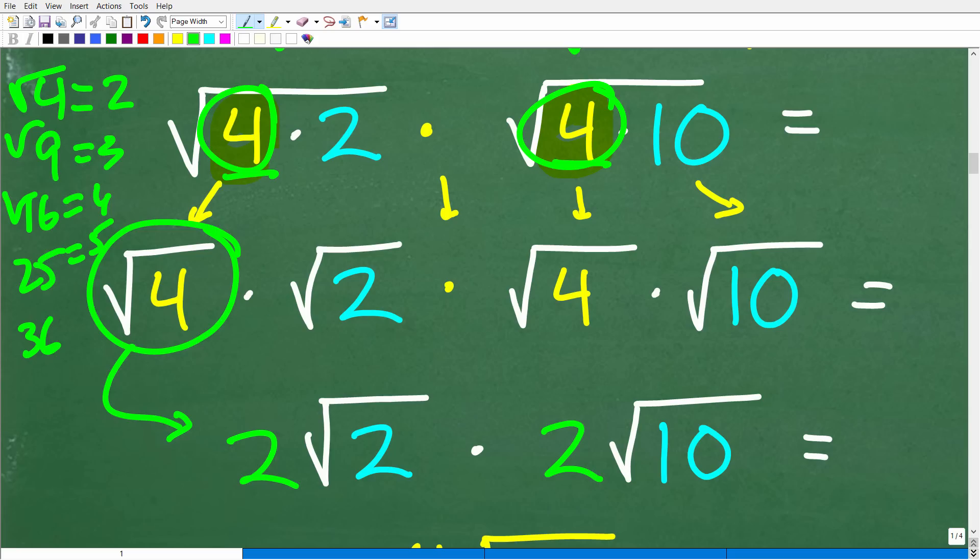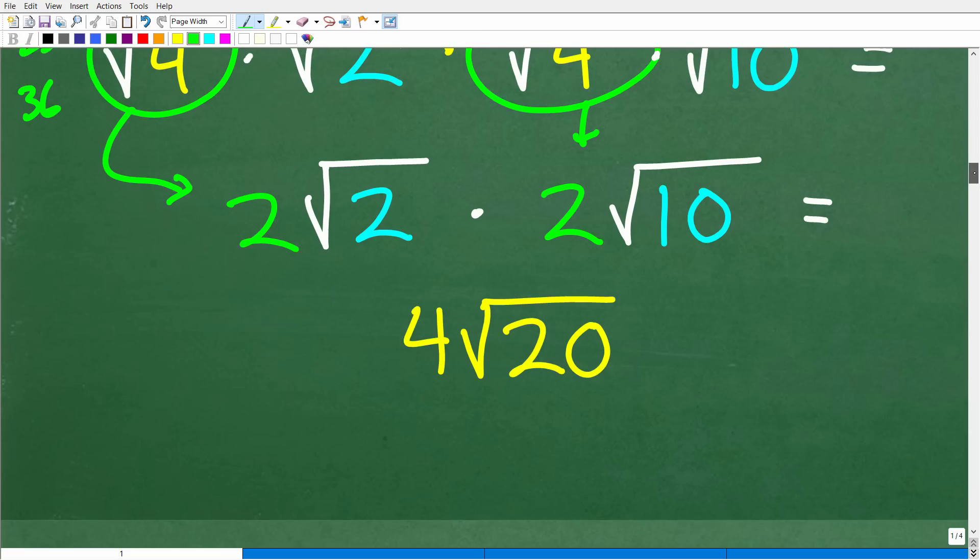The square root of 4 times the square root of 2 is going to be 2 times the square root of 2 times the square root of 10. The square root of 4 here is 2. So, now we have the 2 times the square root of 2 times 2 times the square root of 10.